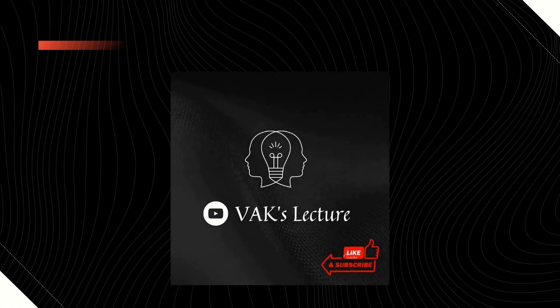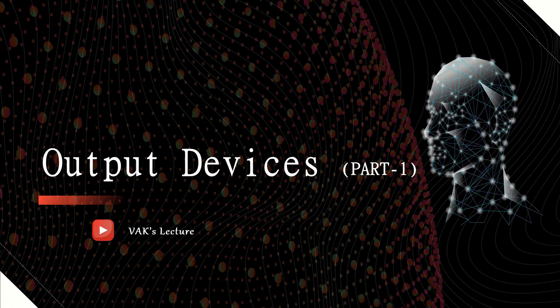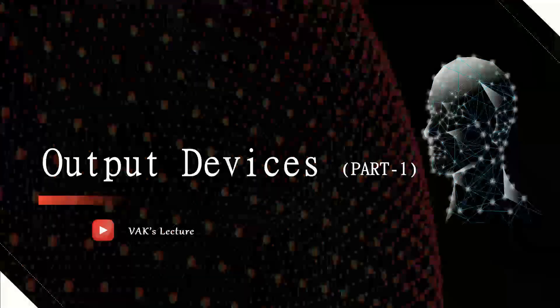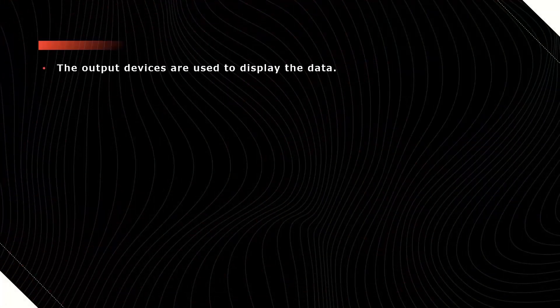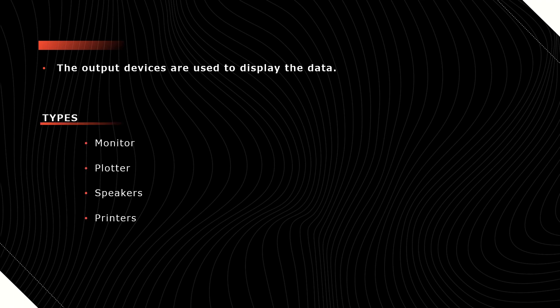Welcome to VAK's lecture. In this video, we will discuss about some of the output devices. The devices which are used to display the data are called as output devices. By using output devices, we can get the data on monitor, on paper, or in some other way. We have different types of output devices: monitors, plotters, speakers, and printers.